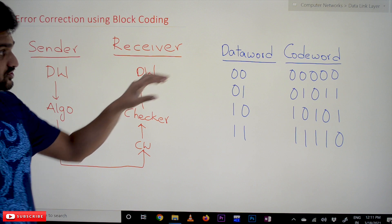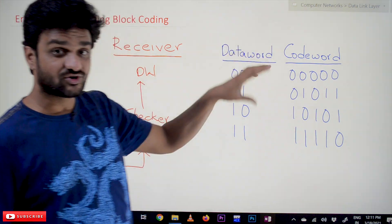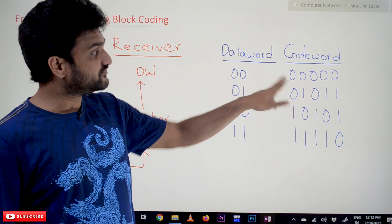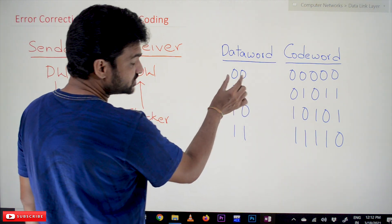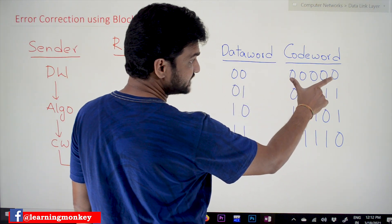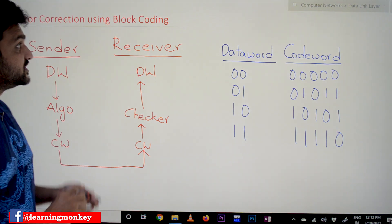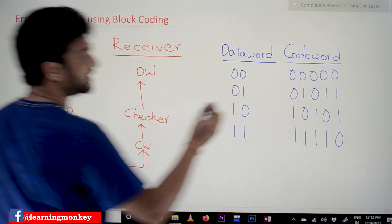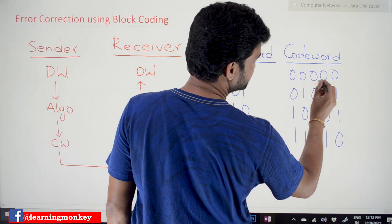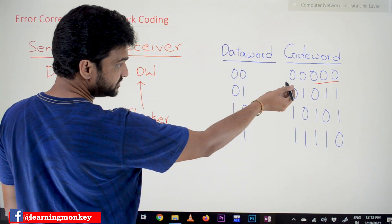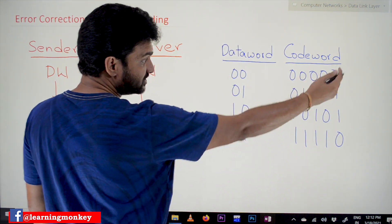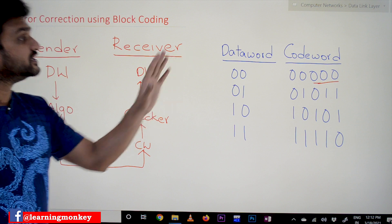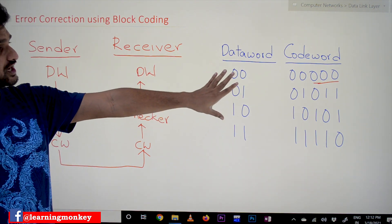Now, using the block coding mechanism, how the errors are corrected — that we will try to understand. So these are the data words and these are the code words. This is a different example from our previous videos, where the data words are of size 2 bits and the code word is of size 5 bits. The redundant bits added are 3 bits, so 2 plus 3 equals 5 — that is the size of the code word.